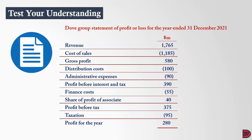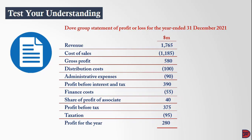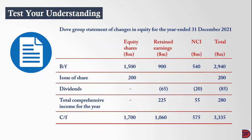Moving on, we look at the DAF Group statement of profit and loss for the year ended 31st December 2021. We have revenue and cost of sales leading to a gross profit of 580 million. We have distribution costs and administrative expenses leading to profit before interest and tax, then finance cost, share of profit from associates, profit before tax, tax, and profit for the year.